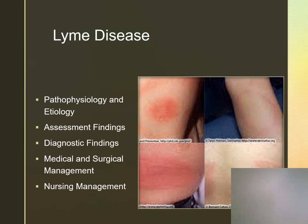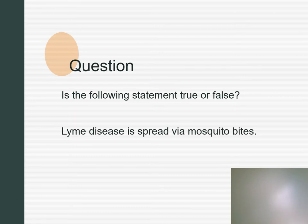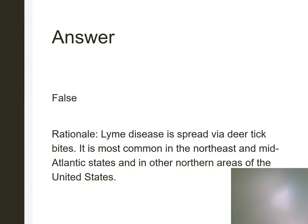We diagnose Lyme disease through serological studies. We treat it with antibiotics and supportive measures. Prognosis is favorable with early treatment; however, there may be permanent multi-system problems with delayed treatment. Nurses need to provide disease, treatment, and prevention education. True or false: Lyme disease is spread through mosquito bites. That's false — it's ticks, especially the deer tick.